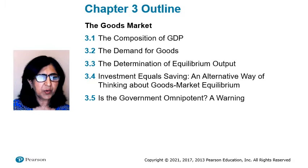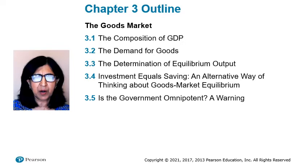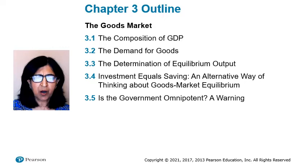Chapter 3 Outline — The Goods Market. Section 3.1 looks at the composition of GDP and the different sources of the demand for goods. Section 3.2 looks at the determinants of the demand for goods. Section 3.3 shows how equilibrium output is determined by the condition that production of goods must equal demand for goods. Section 3.4 gives an alternative way of thinking about goods market equilibrium based on the equality of investment and savings. Section 3.5 looks at the effects of fiscal policy on equilibrium output.